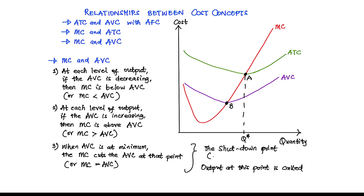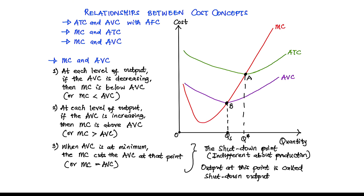At the shutdown point, the firm is indifferent about production. This means that whether the firm shuts down or keeps producing at this point, the level of loss they are making will still be the same. The shutdown point is the point where the firm starts considering closing down temporarily in the short run. The corresponding output at this shutdown point is called QS, or the shutdown output. The shutdown output can either be QS or zero — as stated, the shutdown point is an indifferent point where the firm considers whether to close down temporarily or keep producing.